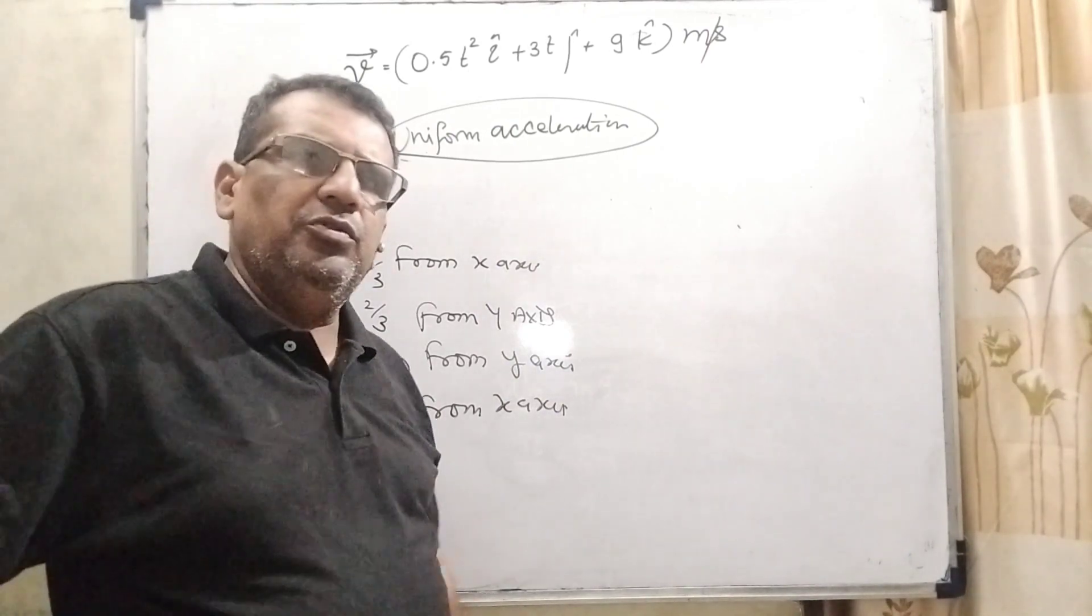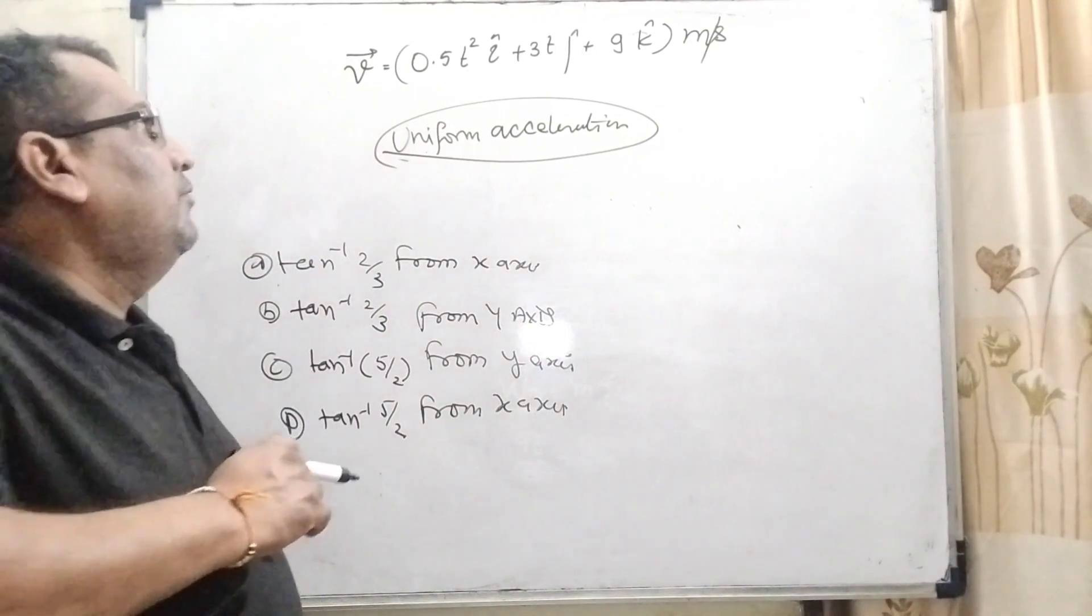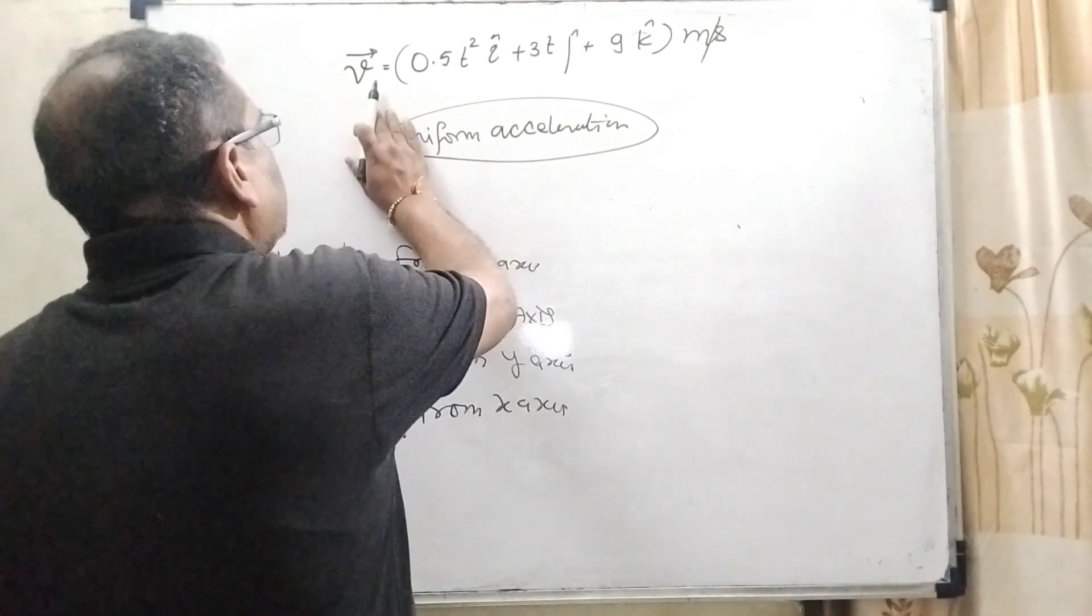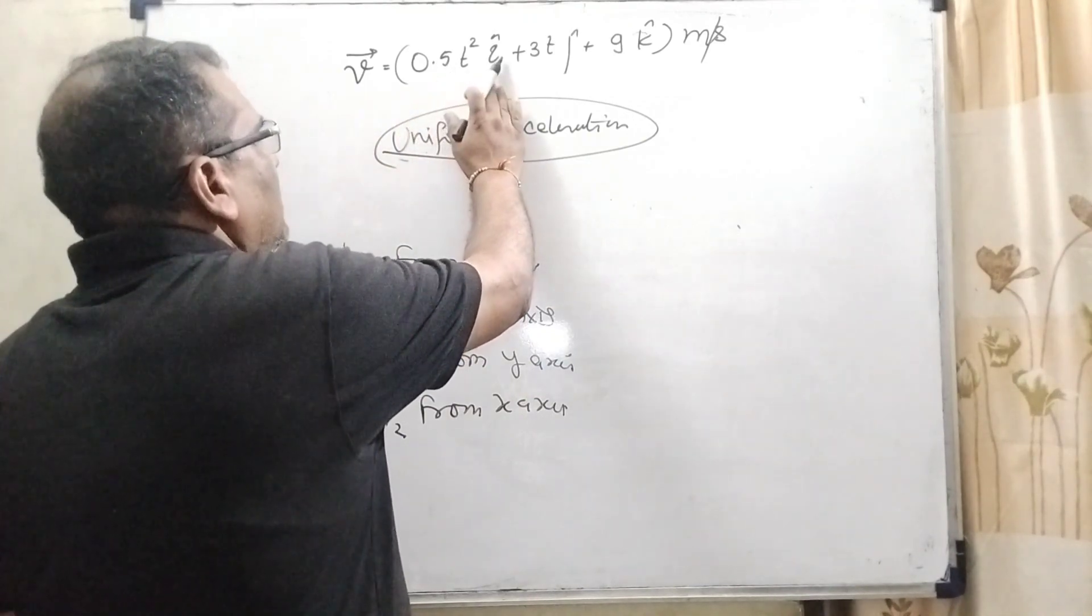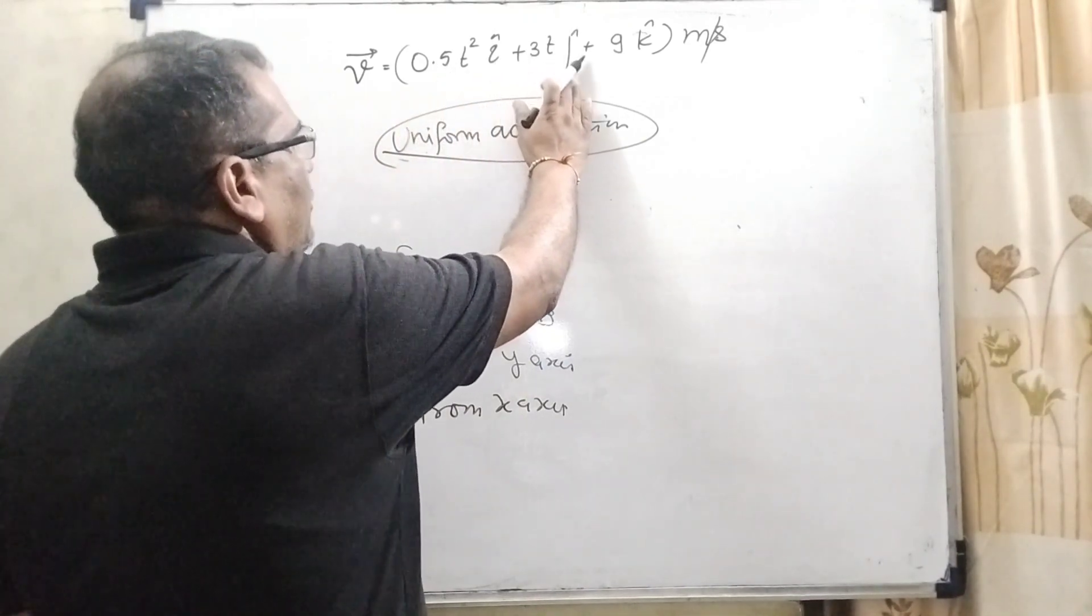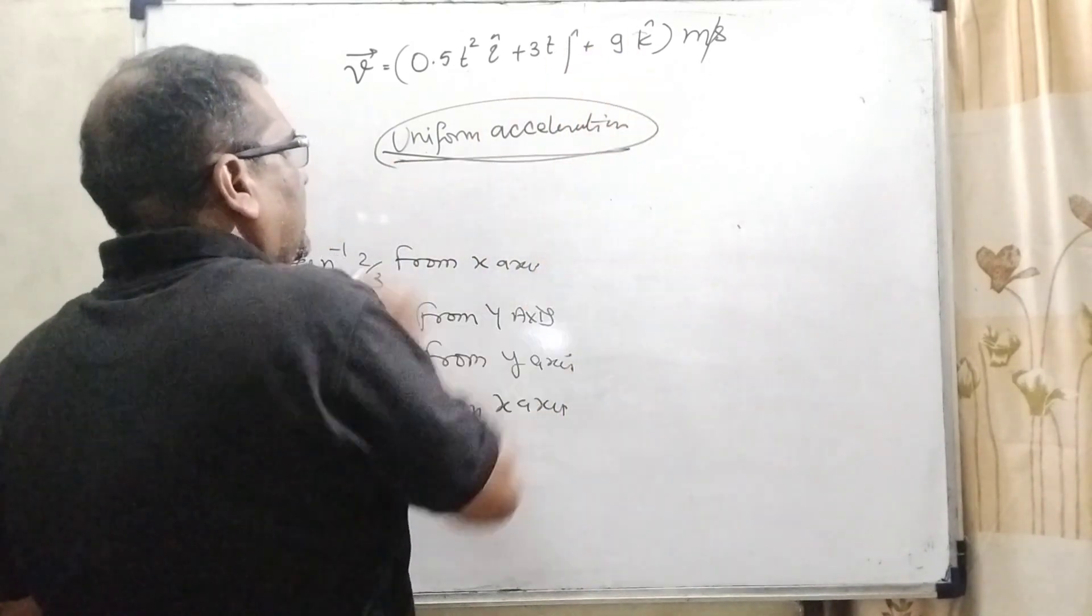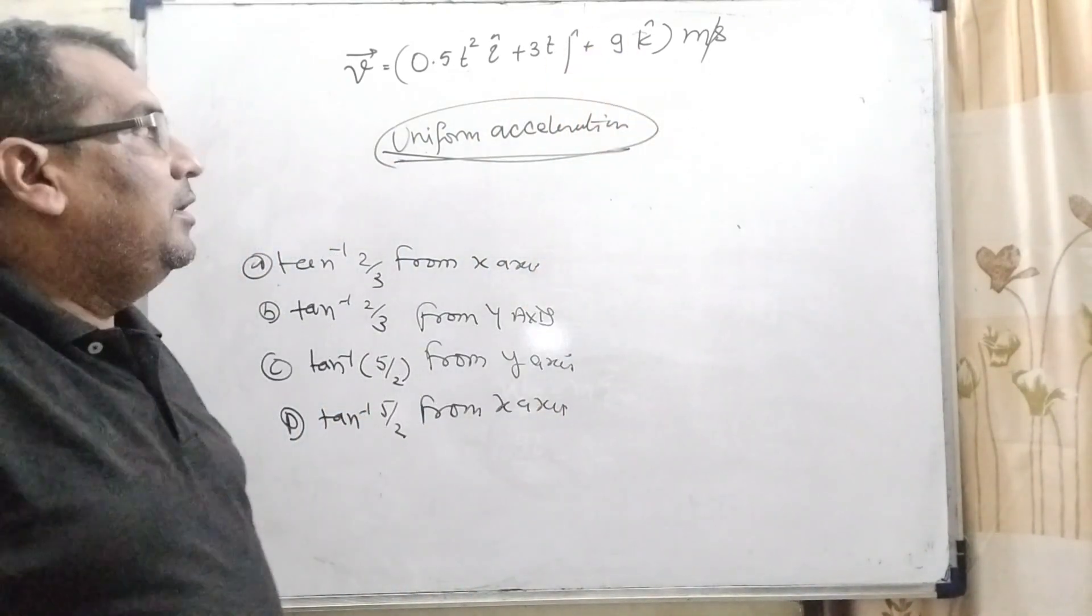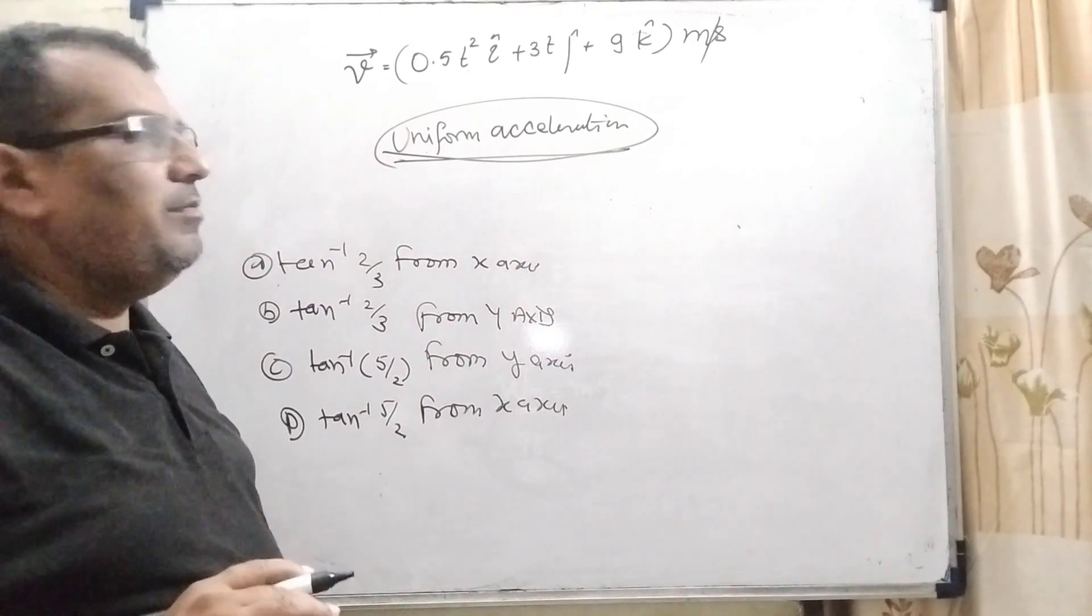This question is related to vector and motion in straight line. So actually what we have given that here velocity v vector is equal to 0.5 t square i unit vector plus 3t j unit vector plus 9k unit vector meter per second. But here the condition is given that uniform acceleration.